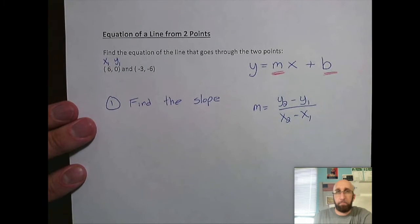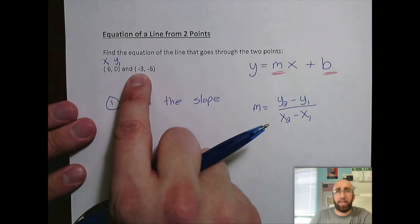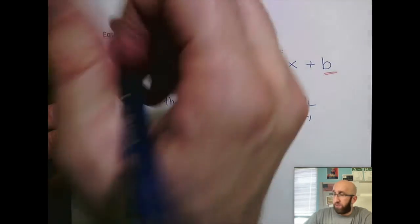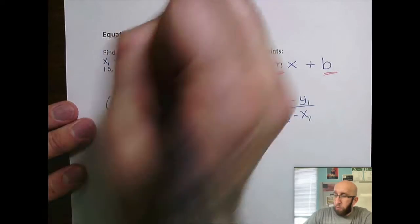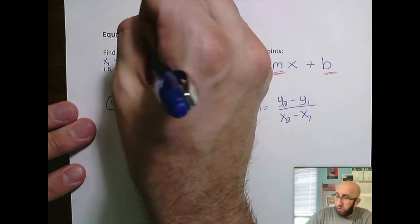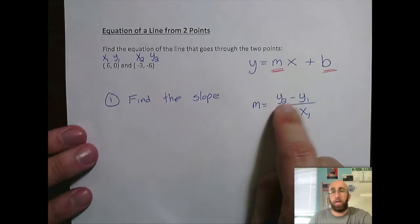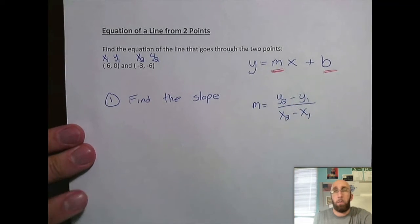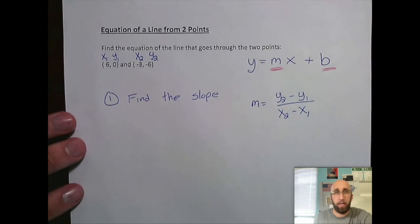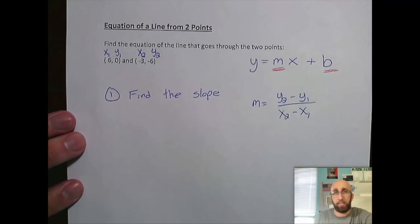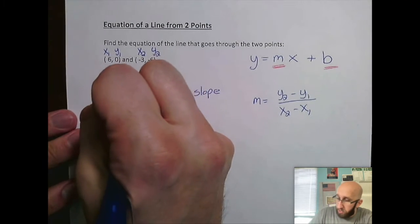x comes first, y comes second. My second point they give me is negative 3, negative 6. Since it's the second point, I'm going to call this x2, y2, x2 and y2. So now it's just a quick game of plugging things carefully, simplify it and see what we got. So away we go.